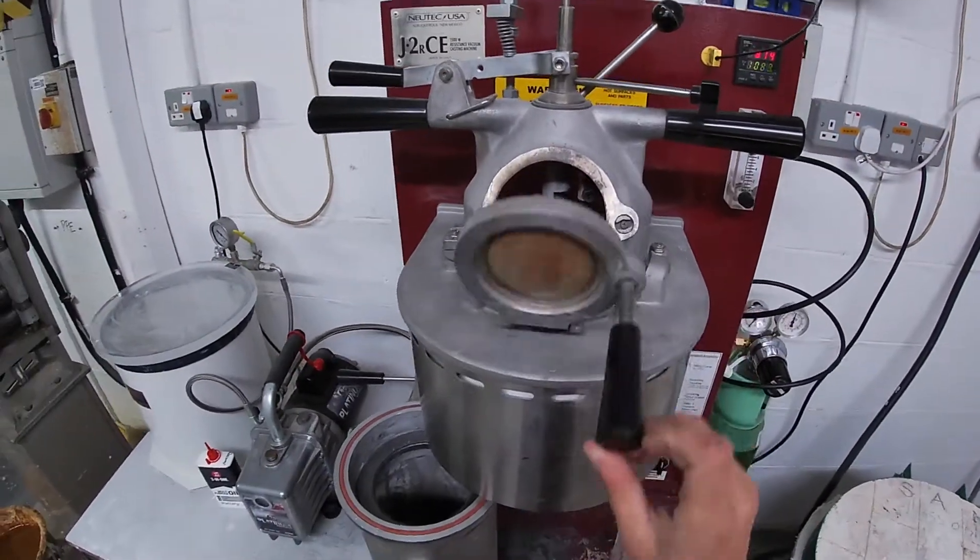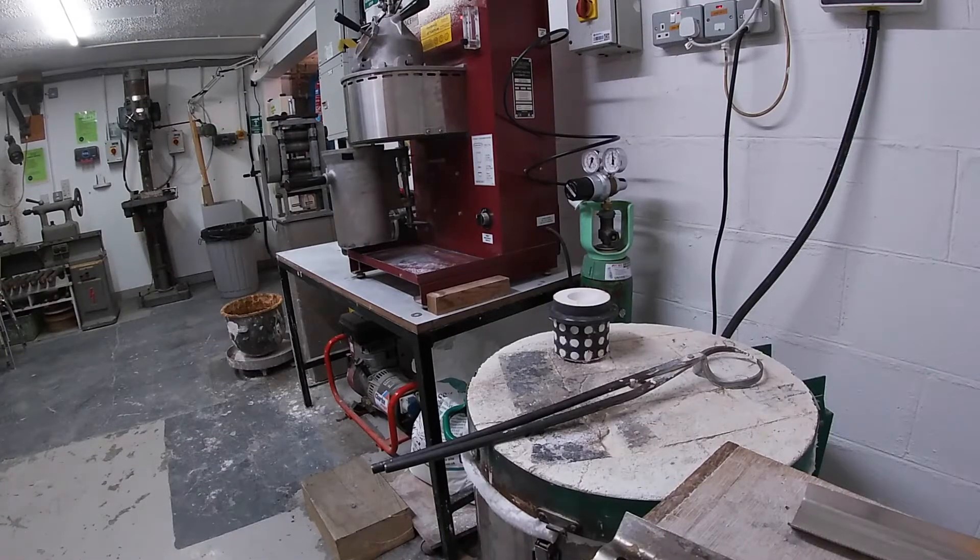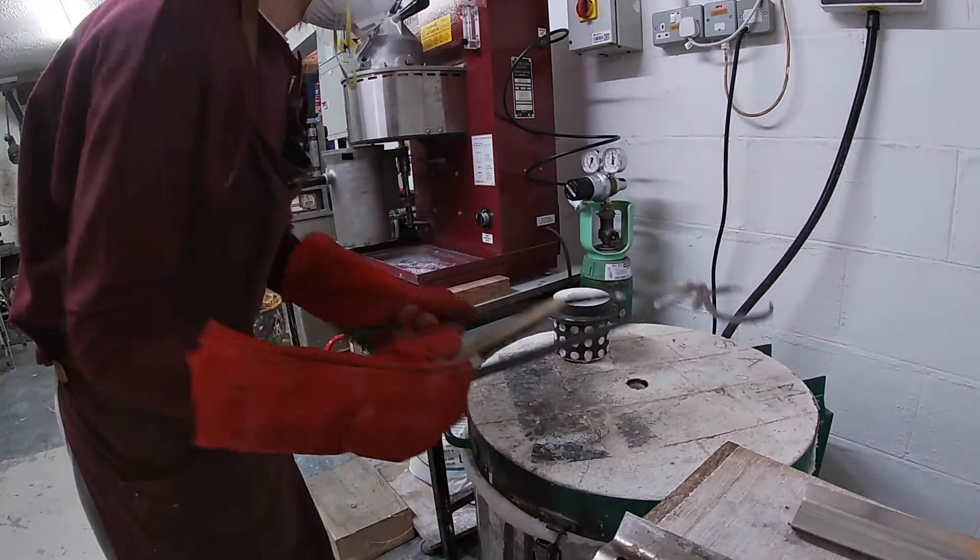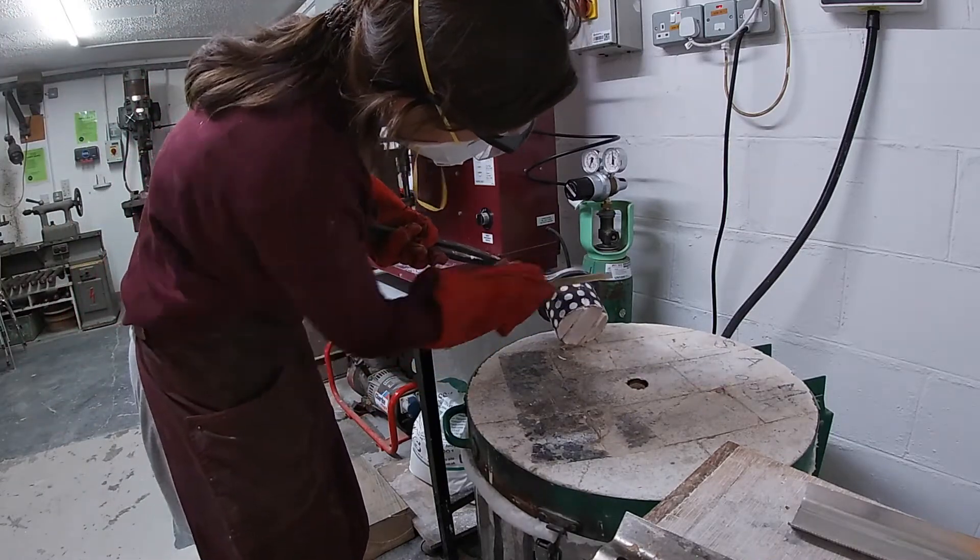Our investment flask has already been burnt out in a kiln before we cast. This has left us with an empty cavity where our wax was, which is why the process is called lost wax casting.